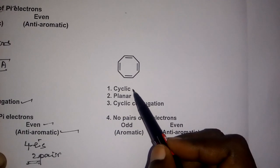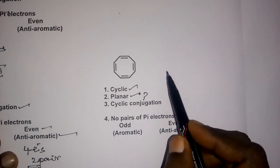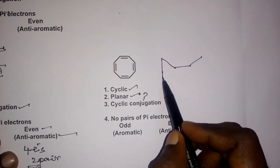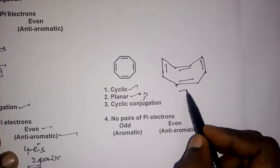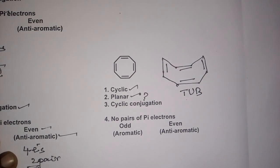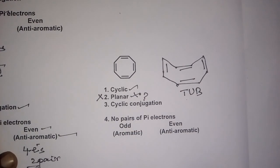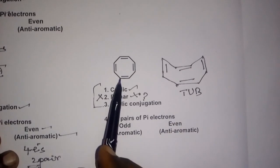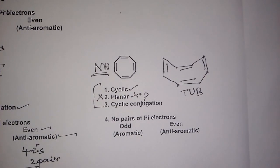For cyclooctatetraene: it is cyclic, but is it planar? Here comes the problem. The actual structure is a tub shape — it is not a planar structure. So cyclooctatetraene fails the second criterion, planarity. As stated, if any one criterion is violated, the molecule is non-aromatic. Here planarity is violated, so cyclooctatetraene is non-aromatic.